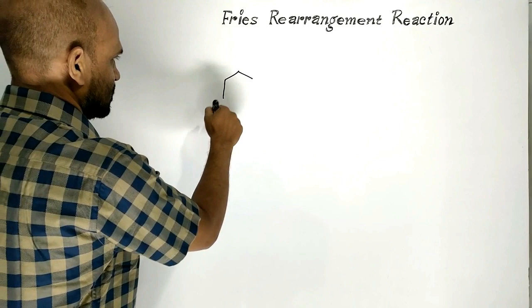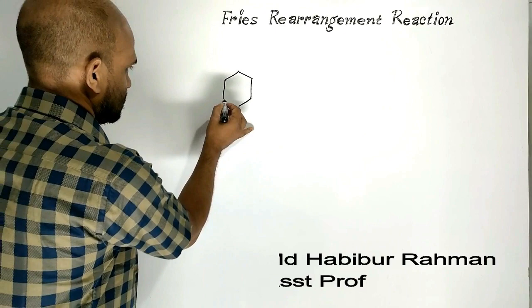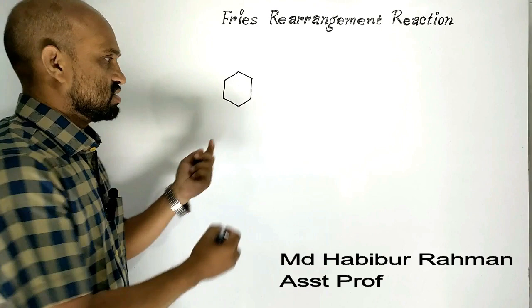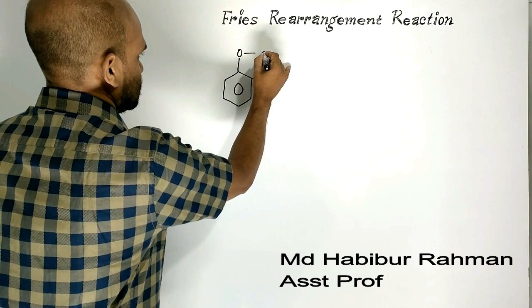This is propane, butane, pentane, hexane. Now this is cyclohexane. Now this is benzene, where one hydrogen is replaced by this group.